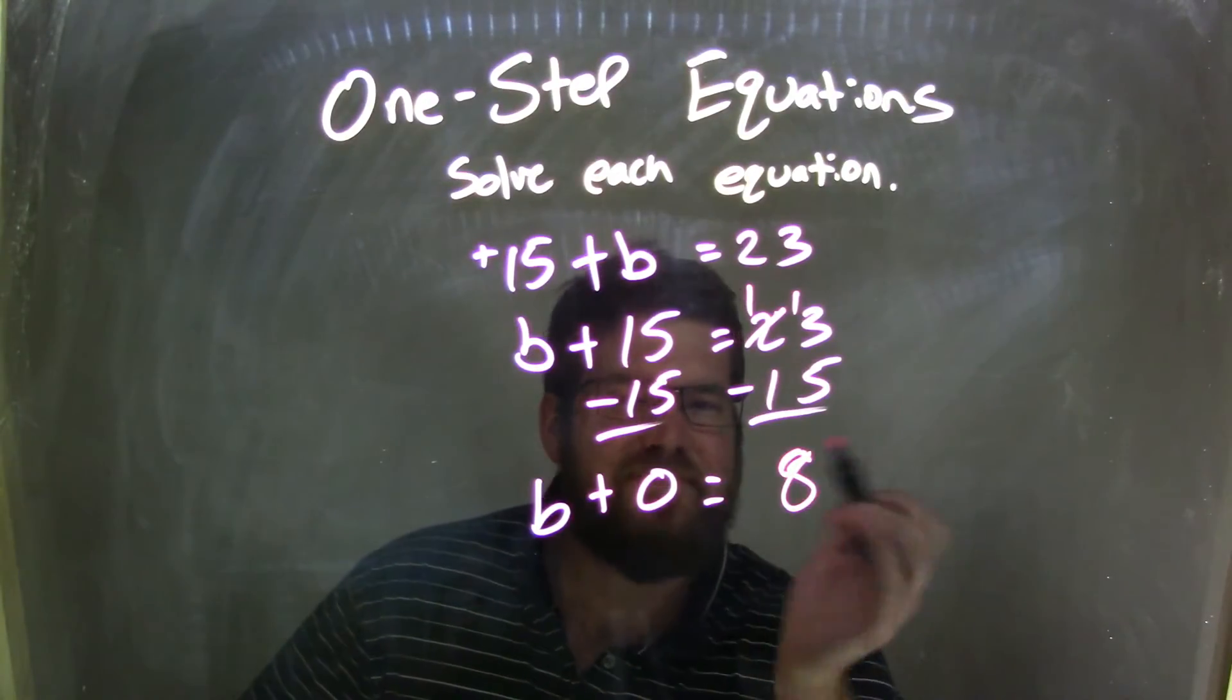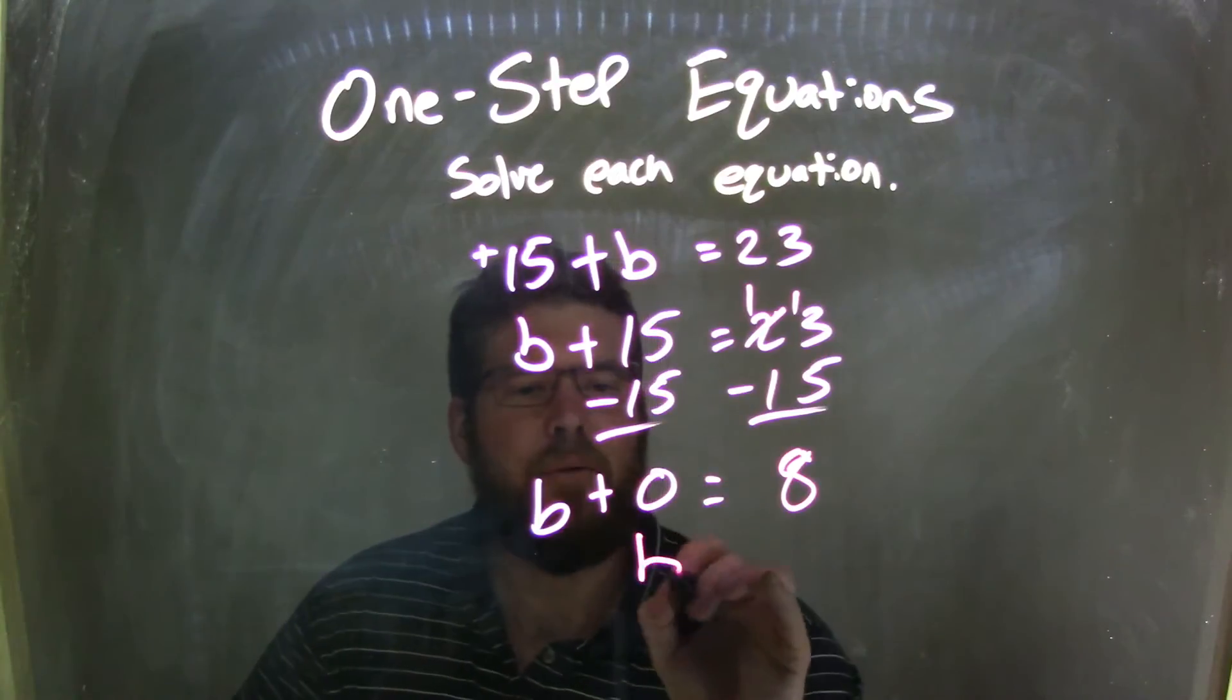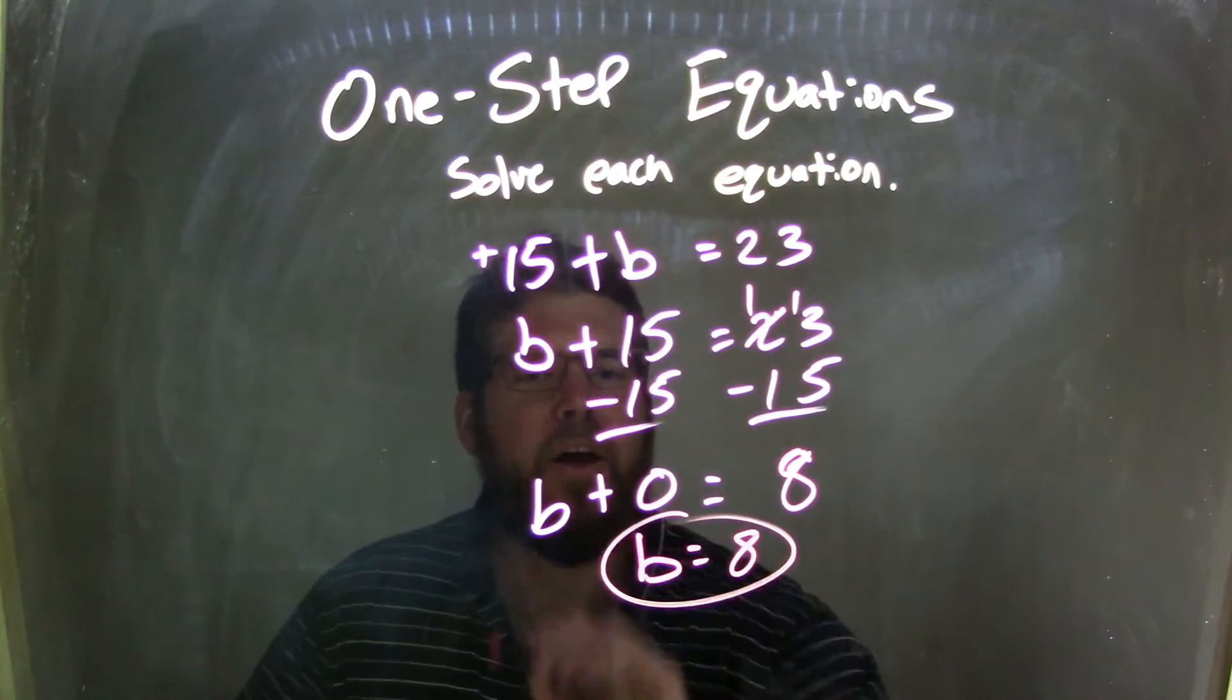b plus 0 equals 8. We don't need to add 0, so now we're left with b equals 8 as our final answer.